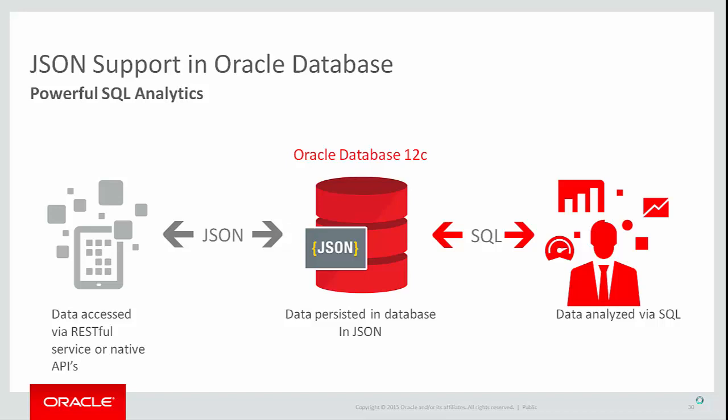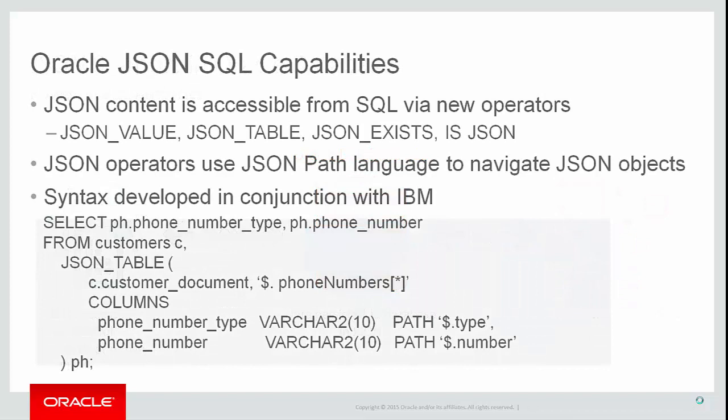The point is that we never know how we're going to want to use the data our applications capture. Sooner or later, somebody will urgently need the answer to a question that was not considered when the application was developed. We need a platform that can supply those answers in a timely manner. By storing our data as JSON in Oracle, we get all the benefits of schema-less development and a NoSQL document store, plus the ability to continue to use the proven power of SQL for analytics and reporting.